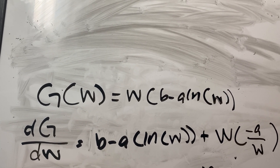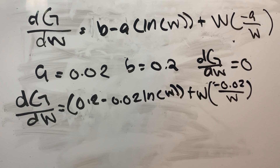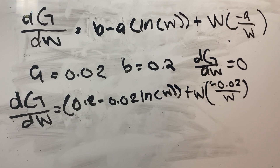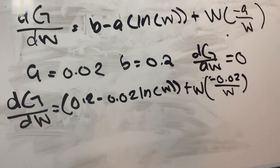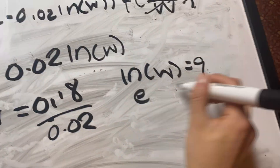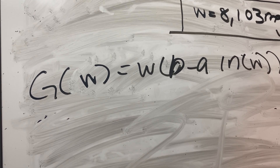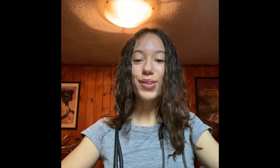Pretty simple, right? So let's apply it to the growth function. We know that the maximum growth rate occurs when the derivative is equal to zero. The derivative of our growth function would look like this. Given that A is equal to 0.02 and B is equal to 0.2, we can plug in the values to solve for W. We can use our new W to plug into the original equation. Now you can calculate your tumor's maximum growth rate so you can be treated and cancer-free in no time.